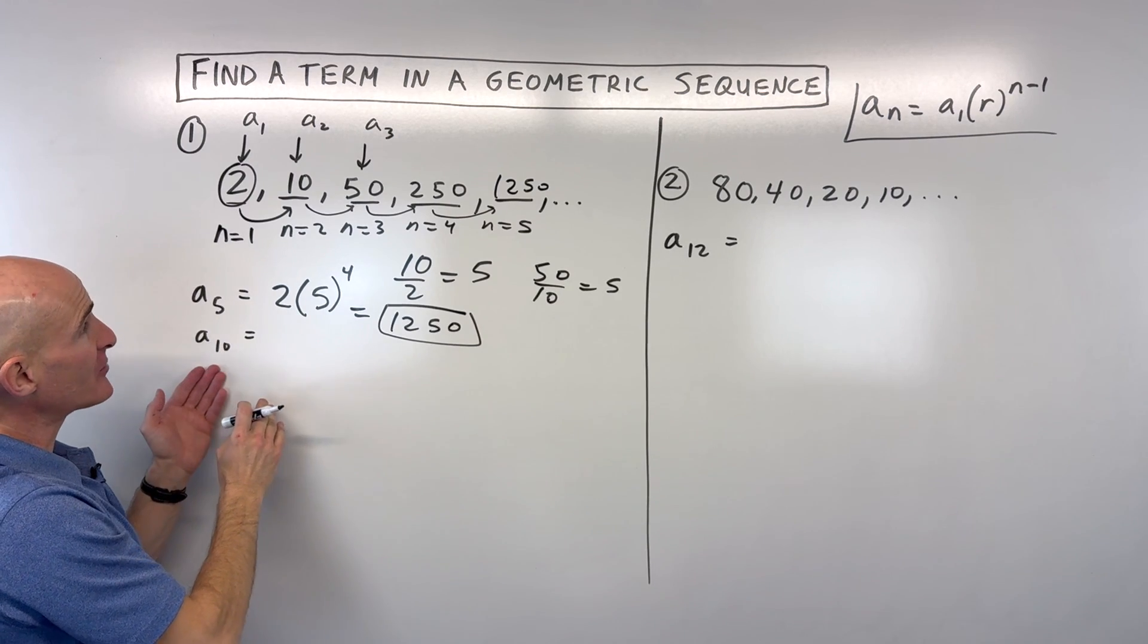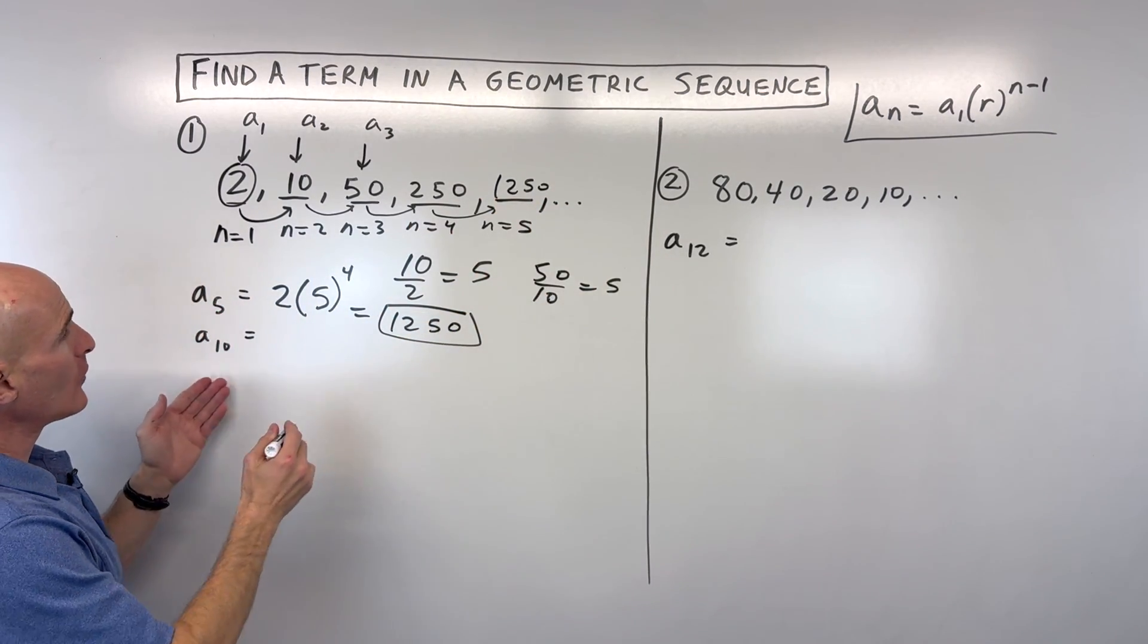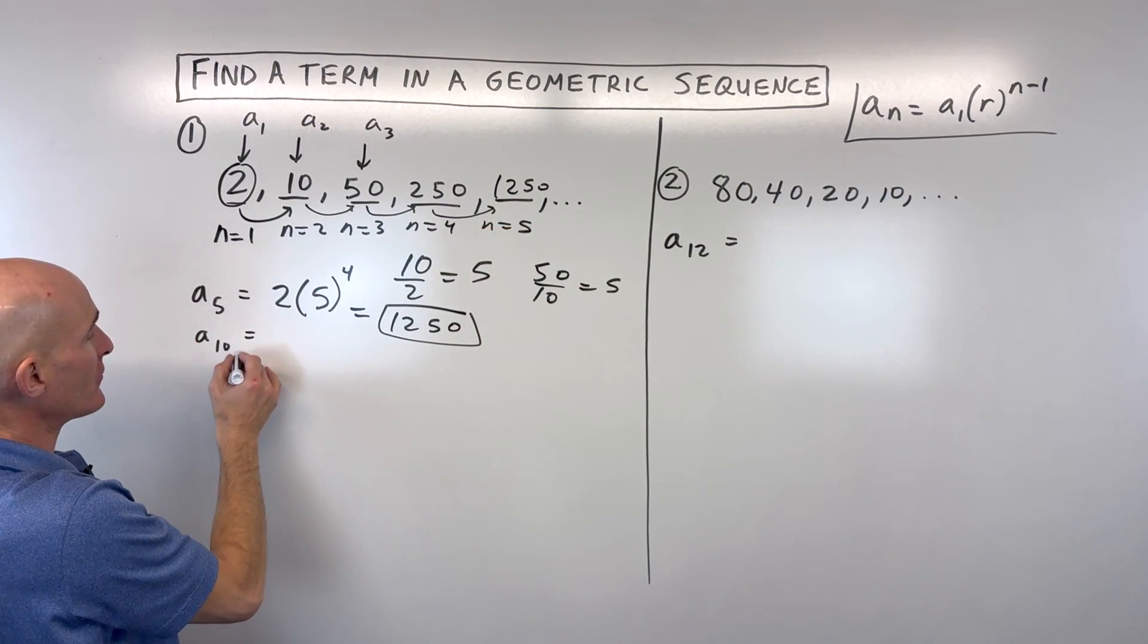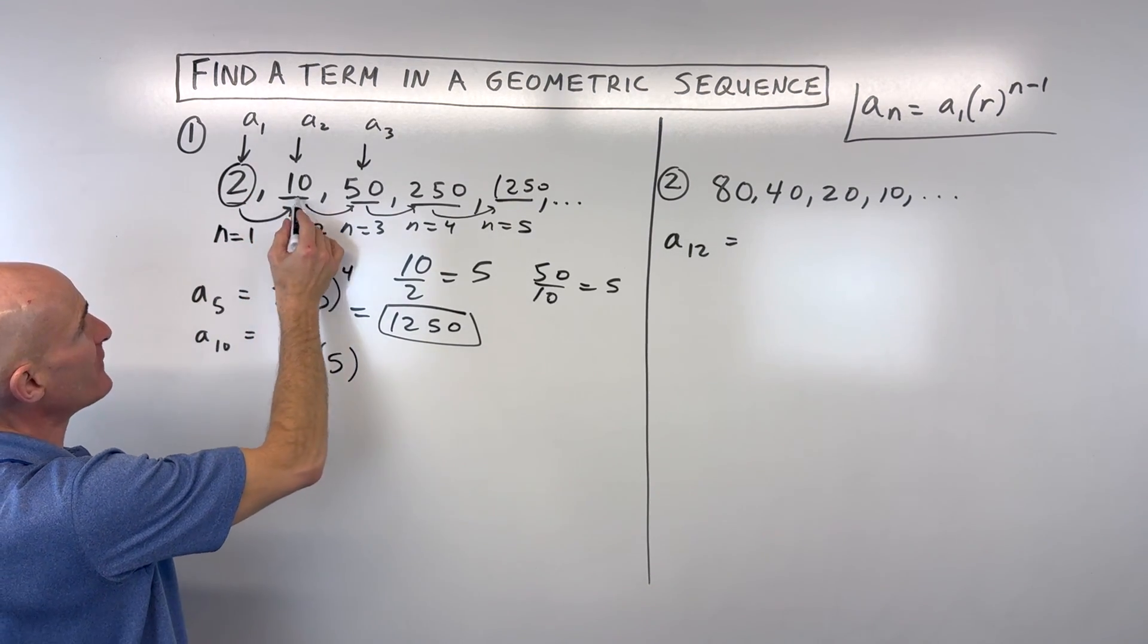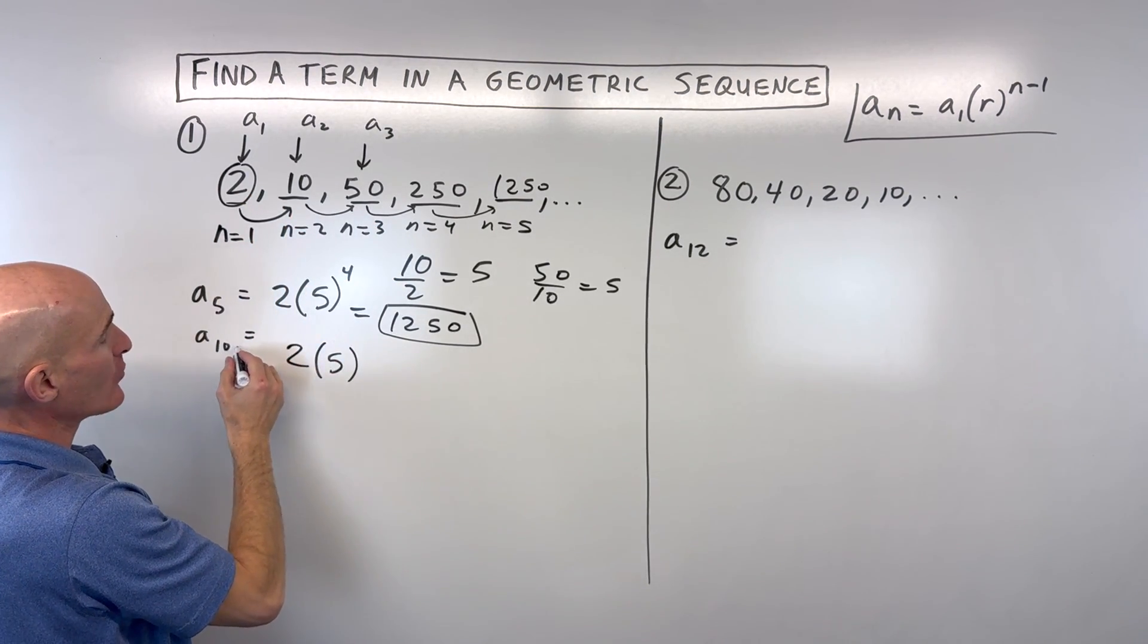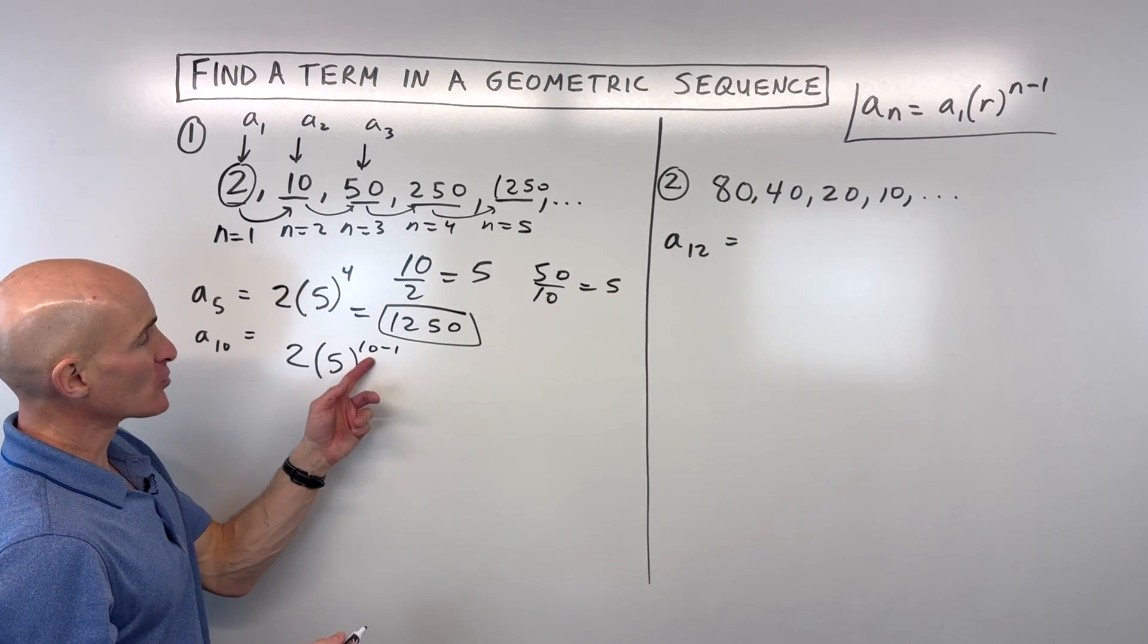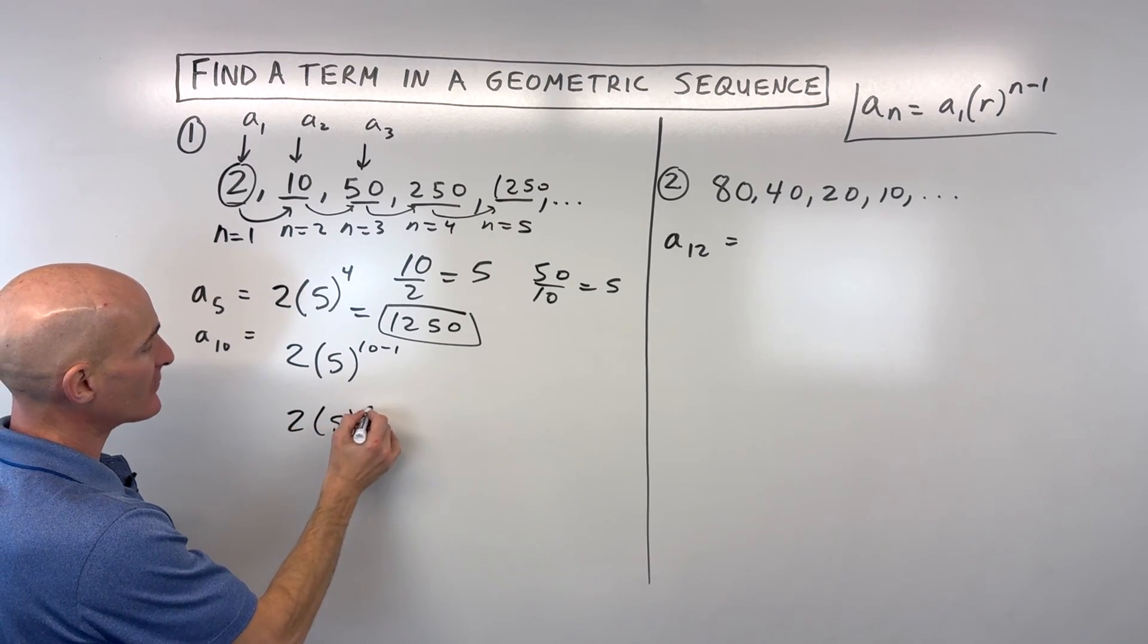But let's say we want to find the tenth term. Well, again, we could keep multiplying by 5, or we can use our formula here. We could say, well, a sub 10, the value of the tenth term, it's the first term, which is 2, times our common ratio, which is 5, what we're multiplying by. And we're going to go 10 minus 1, so n minus 1. That means we're just multiplying by 5 nine times. So this would be 2 times 5 to the ninth.